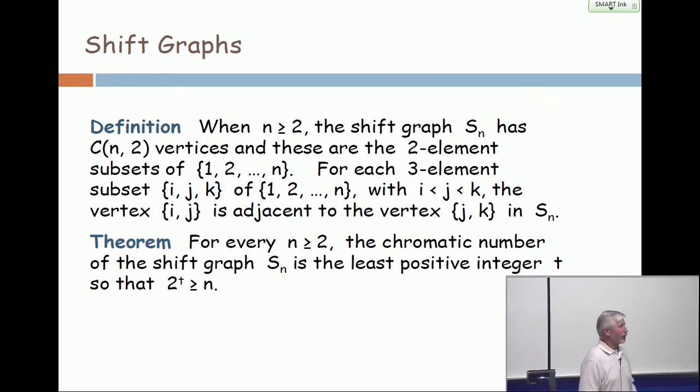Now Blanche Descartes - there may be a real person named Blanche Descartes, but this was a joke. Six quite prominent graph theorists who discovered this result thought that it should be recorded in the literature, but they didn't consider it to be so significant that they wanted their name on it.